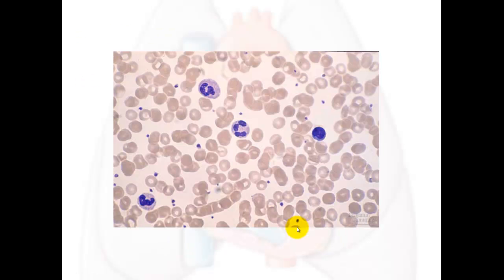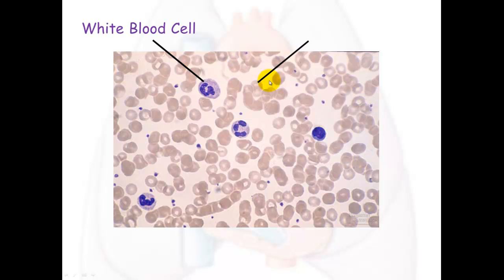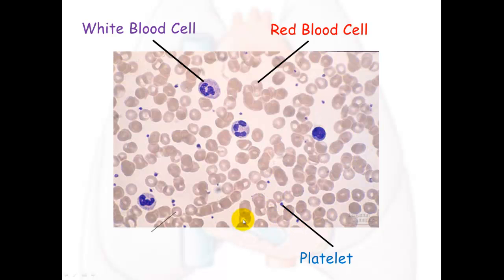Here we have a sample of blood as seen through a microscope — let's identify the different components. The large cells, of which there are only a few, must be white blood cells. The numerous red-shaped cells are red blood cells. The tiny purple shapes, present in small numbers, must be platelets. And the liquid in between all of these cells is plasma.